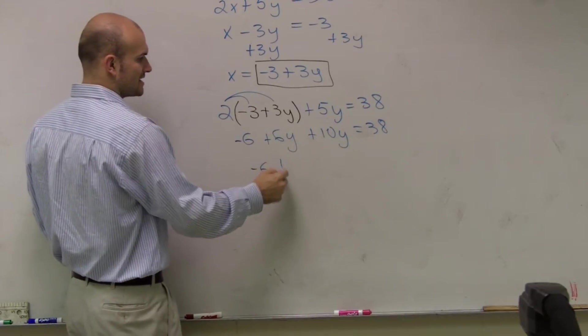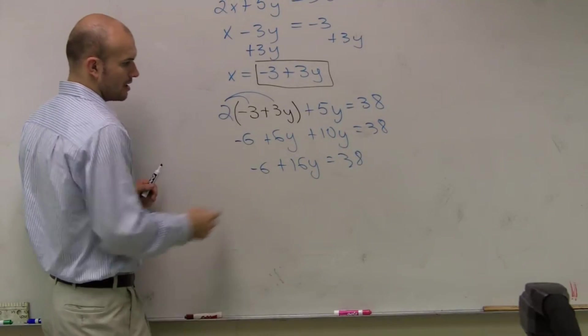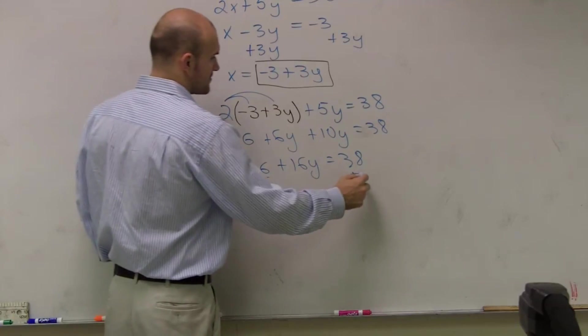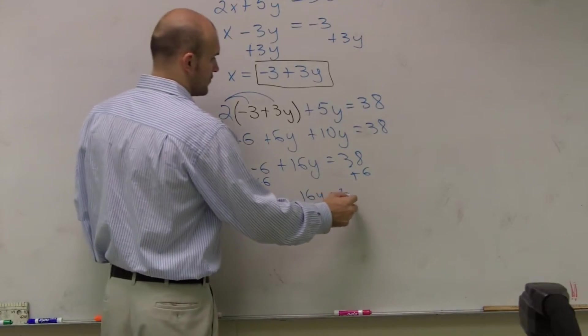Combine my like terms, I have negative 6 plus 16y equals 38. Now, I add 6 to both sides and I get 16y equals 44.